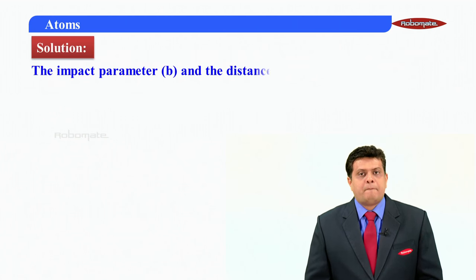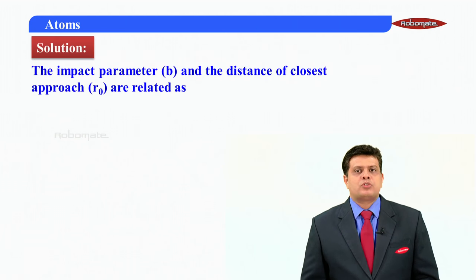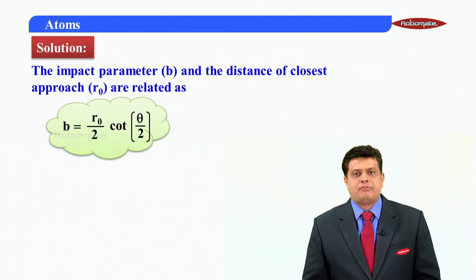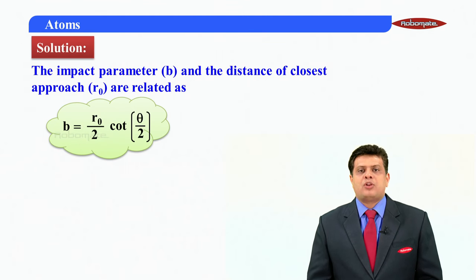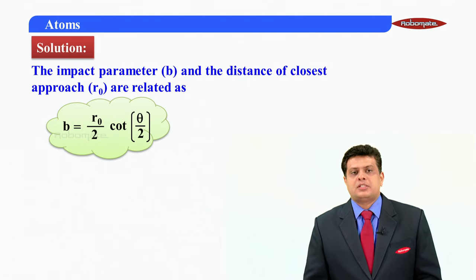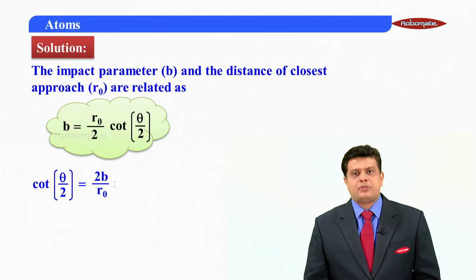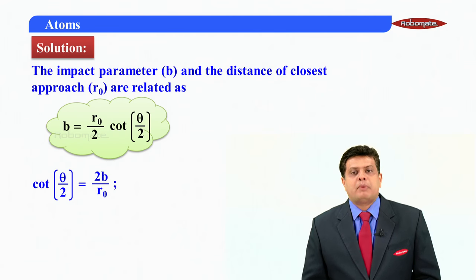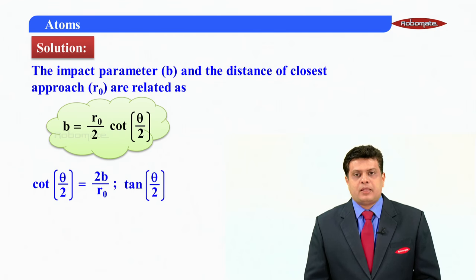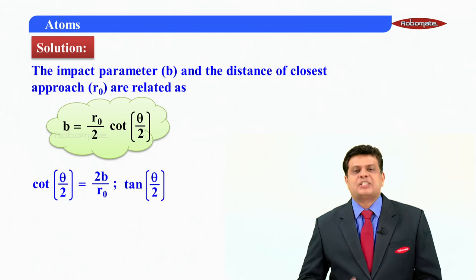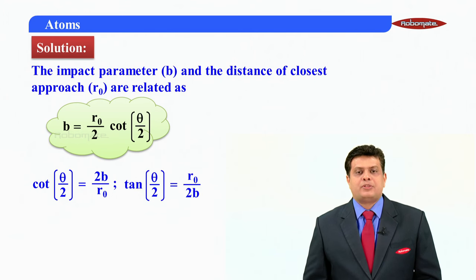Solution says that impact parameter B, distance of closer approach R-naught are related by the formula B is equal to R-naught by 2 into cot theta by 2. They have given the value of B also, they have given the value of R-naught also. So what is cot theta by 2? Cot theta by 2 is nothing but 2B by R-naught. So that is equal to tan theta by 2, just goes to the inverse, R-naught by 2B.